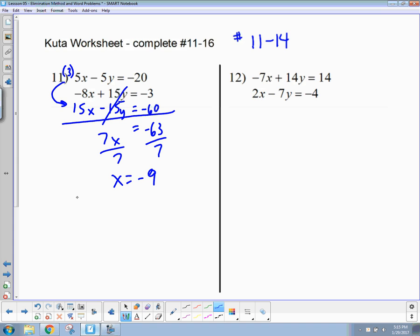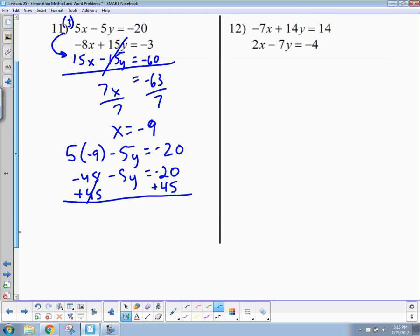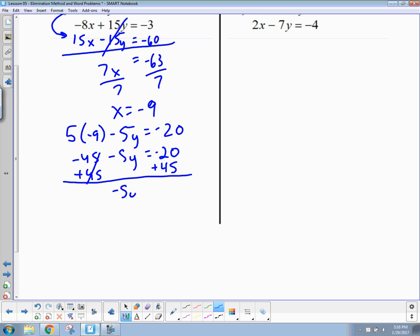Plug that back into one of the equations. I'm picking the top one. Remember to use the original equation, not the modified one. Plug everything in you know. That's negative 45. Negative 5y equals negative 20. I'm going to try to race through these because it's late and I got church to go to. Negative 5y, that should be 25. Divide by negative 5. Y equals negative 5. So my final answer should be negative 9, negative 5.